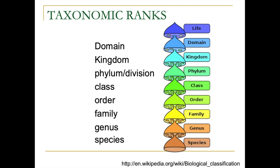Taxonomic ranks are important for all living things — animals, plants, and all others use the same standard rankings. Starting from species, then genus, family, and continuing upward, each rank groups organisms into progressively broader categories.